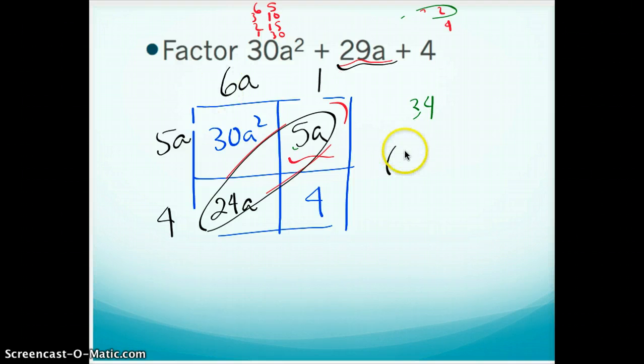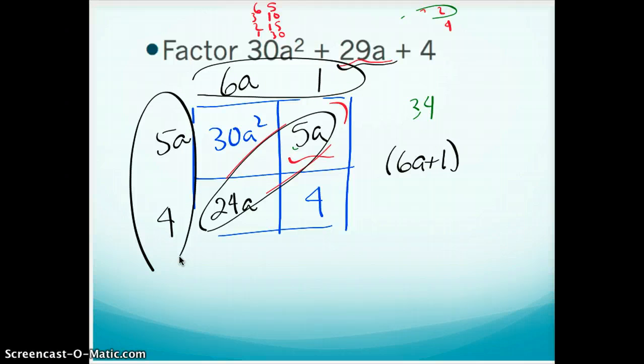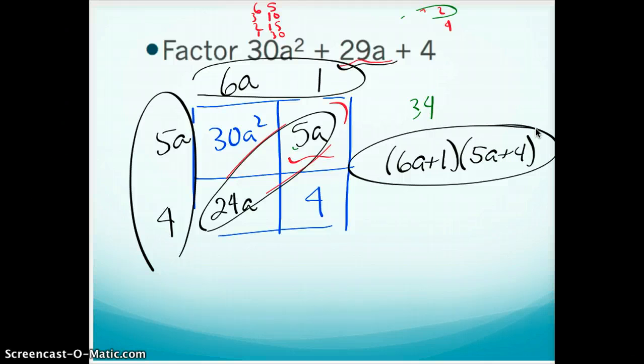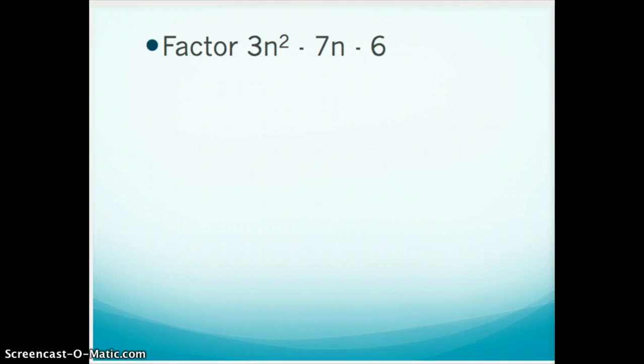So what I'm going to do is I'm going to write my two binomials, which, remember, those are the dimensions across the length and the width. So I'm going to have 6a plus 1 times 5a plus 4. Those are my factors of 30a squared plus 29a plus 4. Once you get really good at guessing and checking, you're going to notice it takes less time.